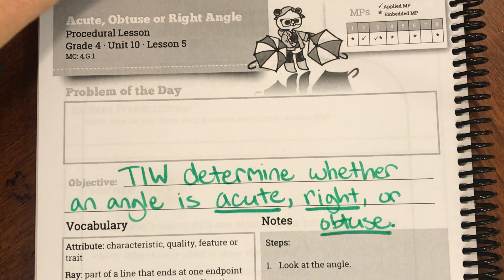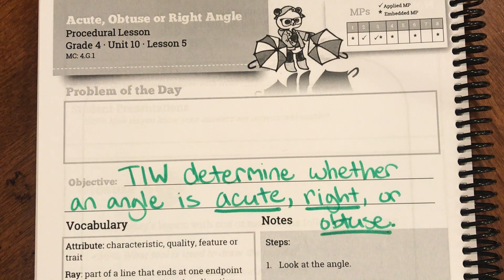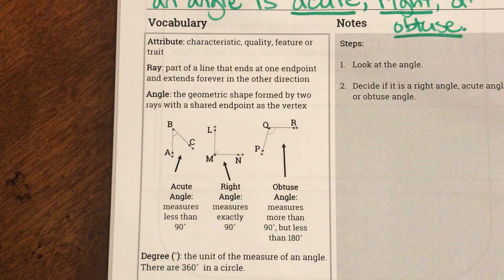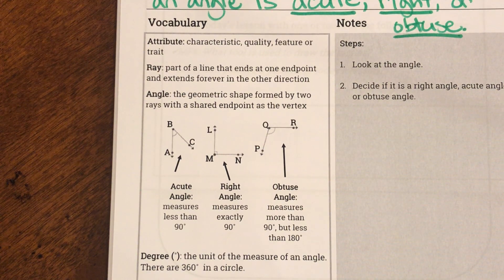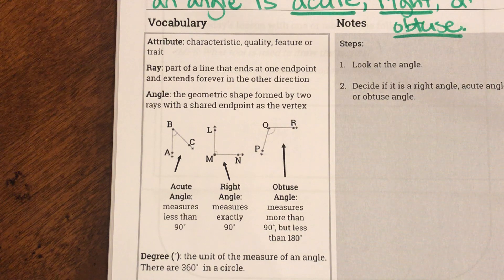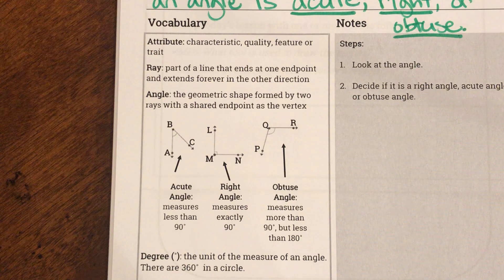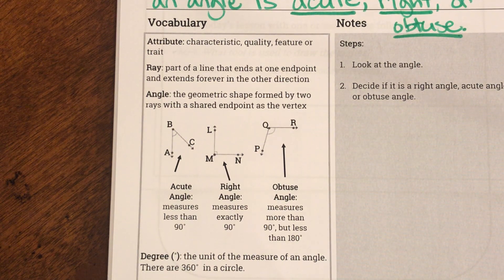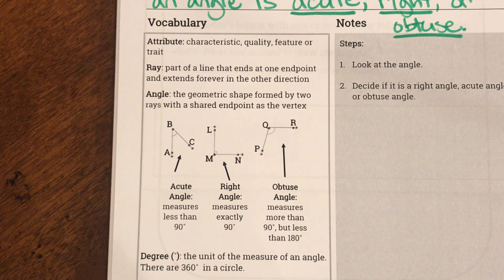If we look at our vocabulary today, we see the word attribute. Attribute is a characteristic, quality, feature, or trait. So, these words acute is going to be an attribute of the angle. It's going to be a feature of the angle or a characteristic of the angle. Our next word is ray, and that's a word that we've seen before, and angle we have seen before.